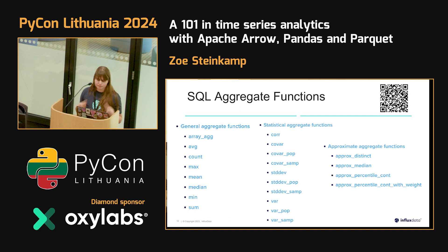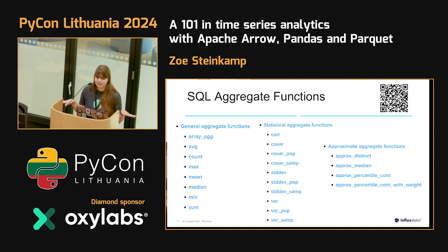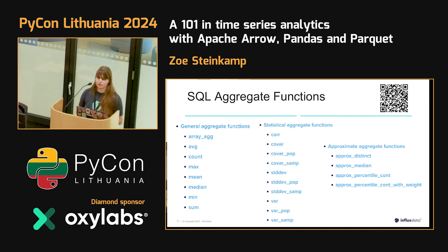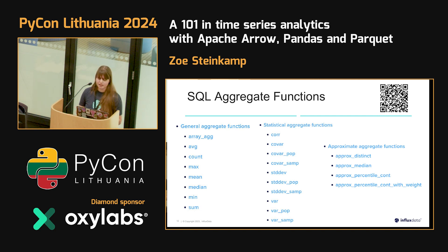InfluxDB's new version works with SQL — which is a little confusing — but it's not a relational database. We just accept the SQL query language, specifically a flavor from Apache DataFusion. SQL comes in many flavors: MySQL, PostgreSQL, all with slightly different syntax. We have a number of aggregate functions out of the box, which is very helpful for data scientists — I personally use the general and statistical aggregate ones most often.